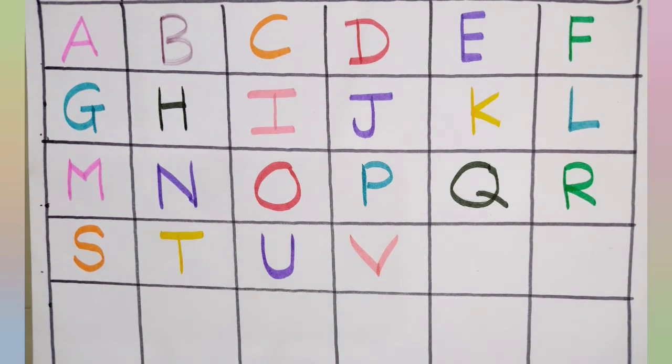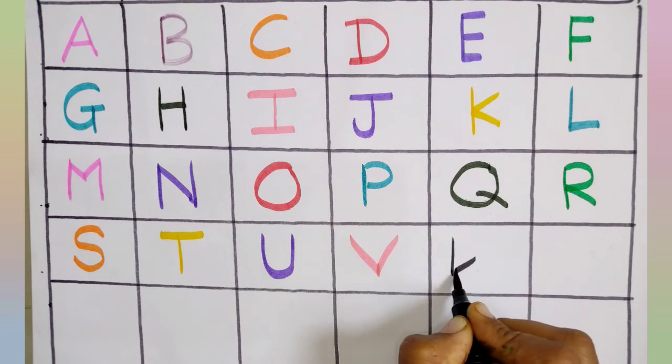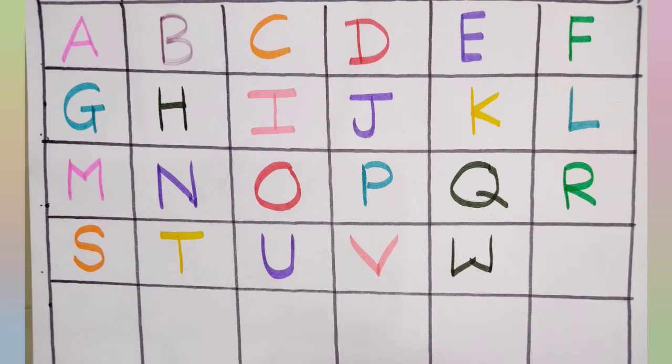This is a peach color, V, V for van. This is a black color, W, W for watch. This is a pink color, X, X for xylophone.